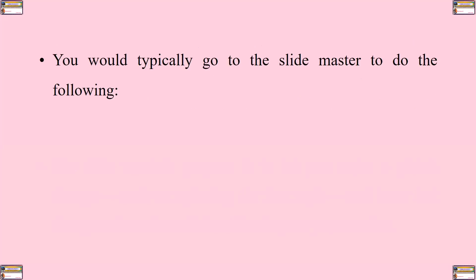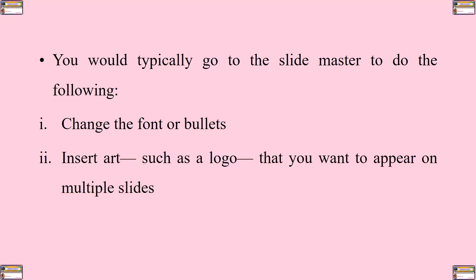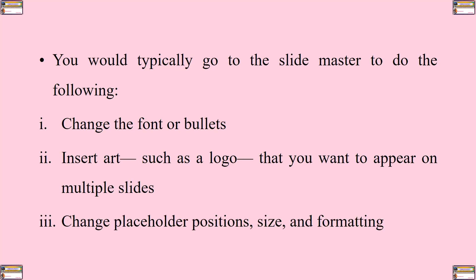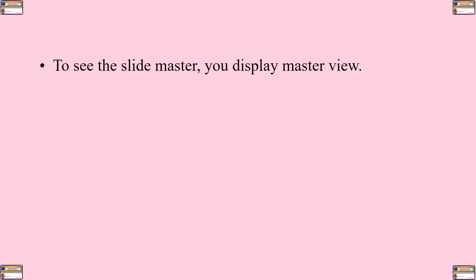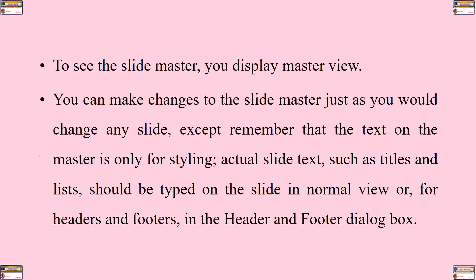You will typically go to the slide master to do the following: number one, to change the font or bullets; to insert art, such as a logo, that you want to appear on multiple slides; and to change placeholder positions, size, and formatting. To see the slide master, you display master view. You can make changes to the slide master just as you would change any slide, except remember that the text on the master is only for styling.